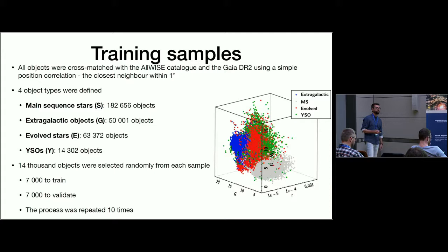After we collected these objects that serve as the training sample, we had to match it to the Gaia and AllWISE sources by using one arc second radius and the closest neighbor was labeled. In these four big groups we found as many objects as listed here. For the YSOs we found only 14,302 objects. To avoid a bias by the number of objects in each training sample, we chose 14,000 objects from each. These were selected randomly: 7,000 to train and 7,000 to validate.